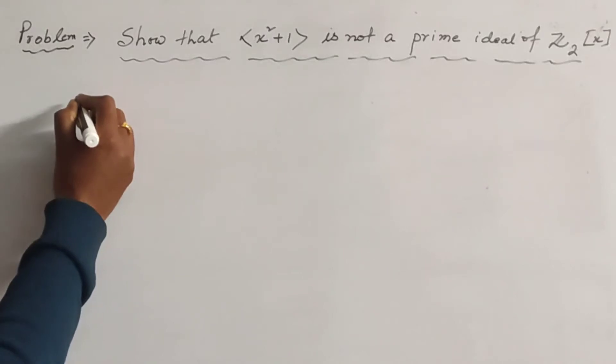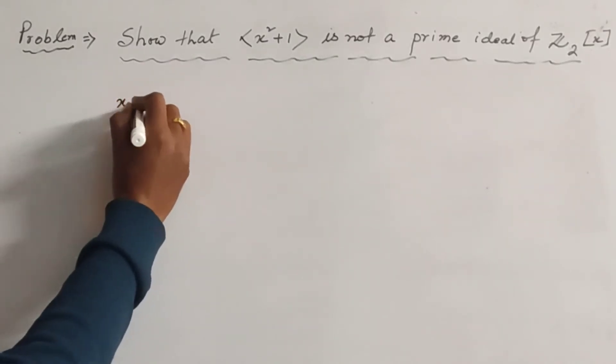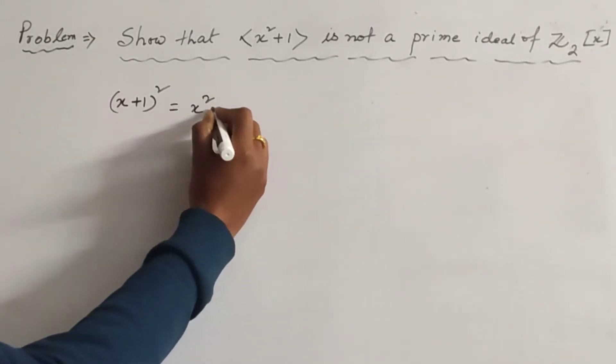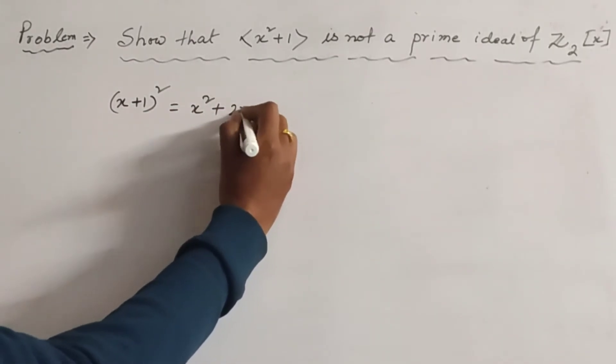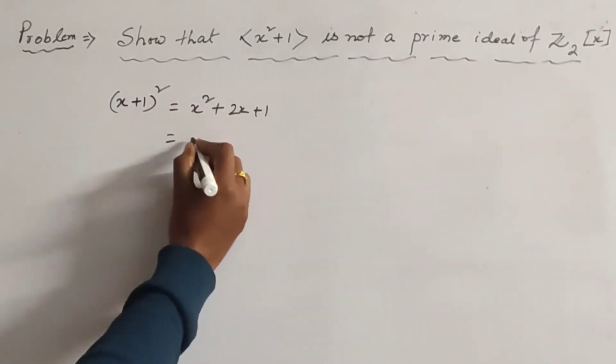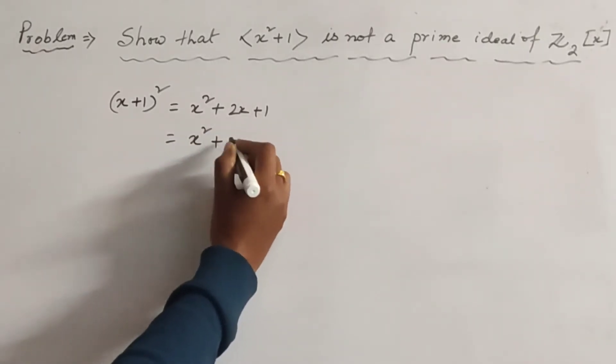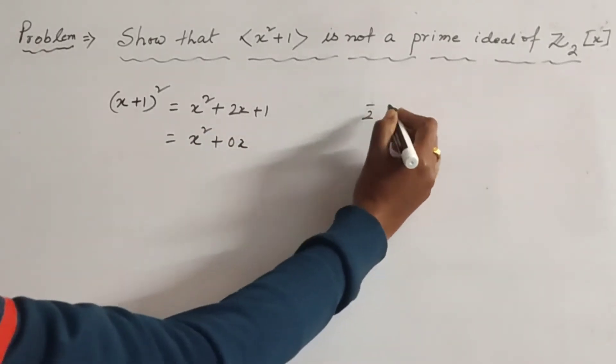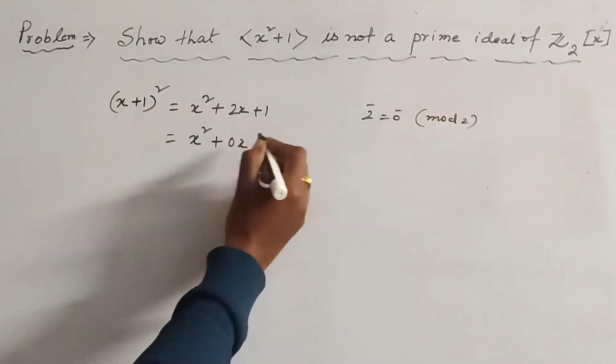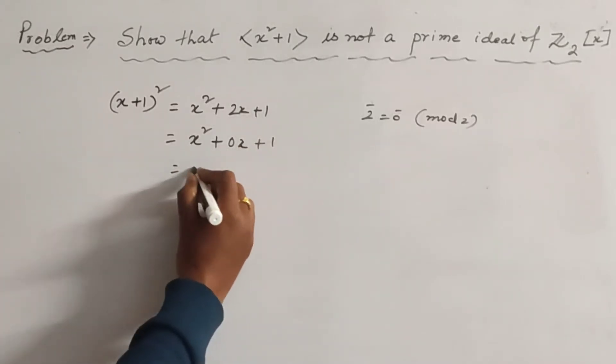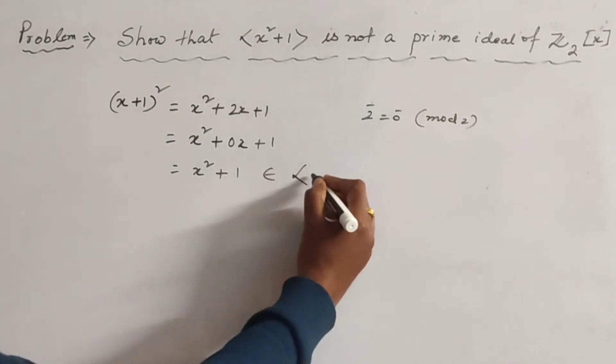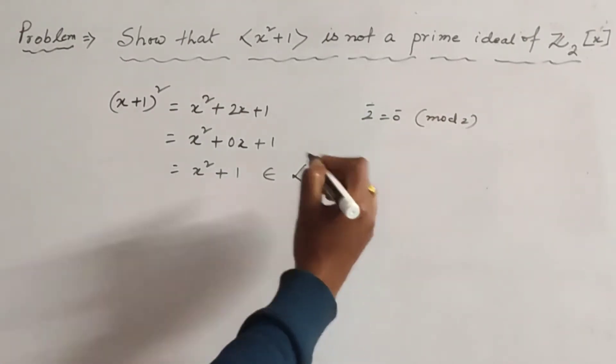We notice that (x + 1)² = x² + 2x + 1. And since this is 2x, so x² + 0x because 2 plus is equal to 0 plus mod 2, plus 1, and this is x² + 1. And this belongs to the principal ideal generated by x² + 1.